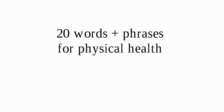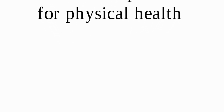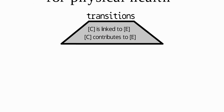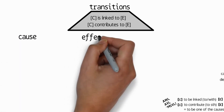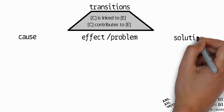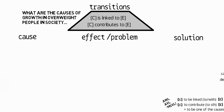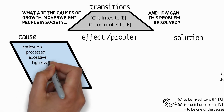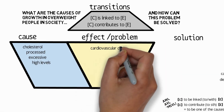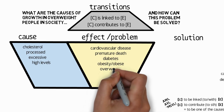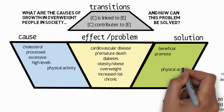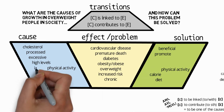That's the 20 words and phrases related to physical health. To summarize by category: we had two cause-effect transitions — 'is linked to' and 'contributes to.' Most other words can be categorized as causes of health problems, effects, the problems themselves, or solutions. This kind of topic is very common in the IELTS exam — for example, 'What are the causes of growth in overweight people in society and how can this problem be solved?' Cause words include cholesterol, processed, excessive, and high levels. Effect words include cardiovascular disease, premature death, diabetes, obesity/obese, overweight, increased risk, and chronic. Solutions include beneficial and promote.